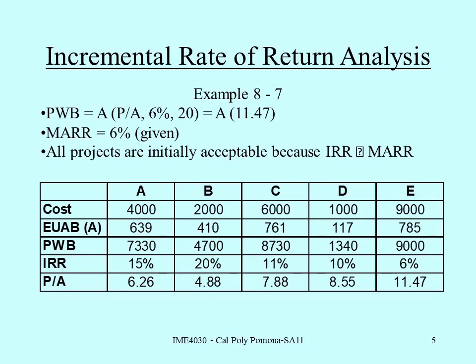In this example we have five alternatives and the costs are shown for the first year — the upfront P value. For example, alternative A is four thousand dollars and alternative B is two thousand dollars. Also shown is the equivalent uniform annual benefit; for alternative A that's six hundred and thirty-nine dollars a year. The number of periods is twenty, so n equals 20. The present worth of benefits is shown — that's simply the equivalent uniform annual benefit multiplied by the P over A factor. The minimum attractive rate of return is six percent, so it's P over A at six percent for twenty periods.